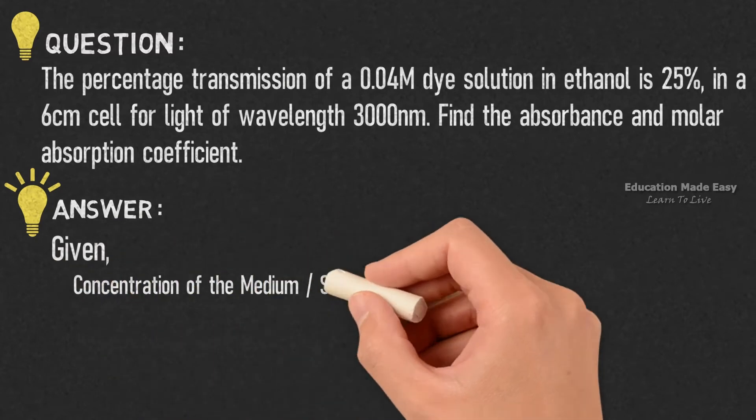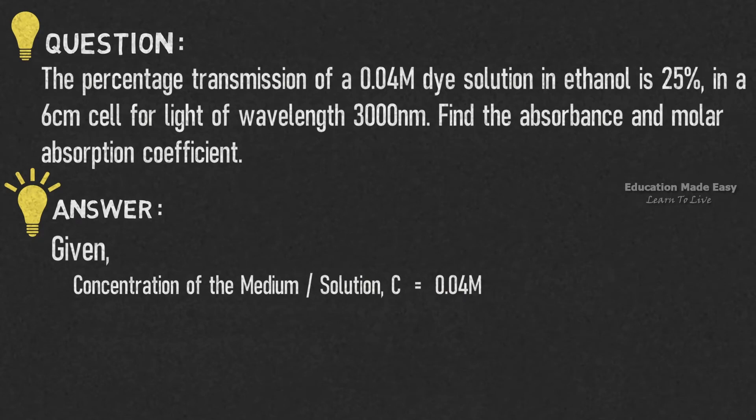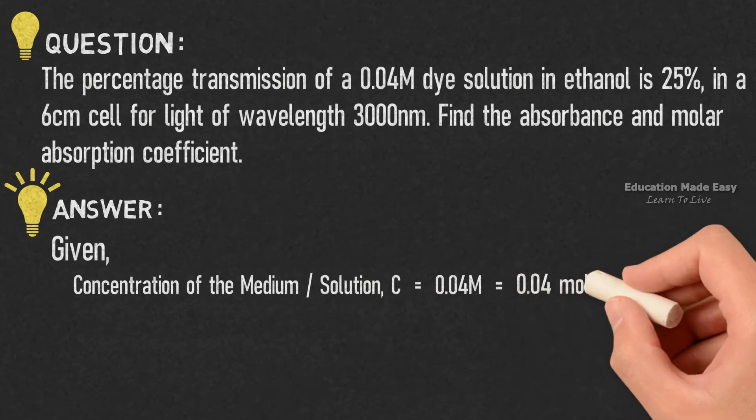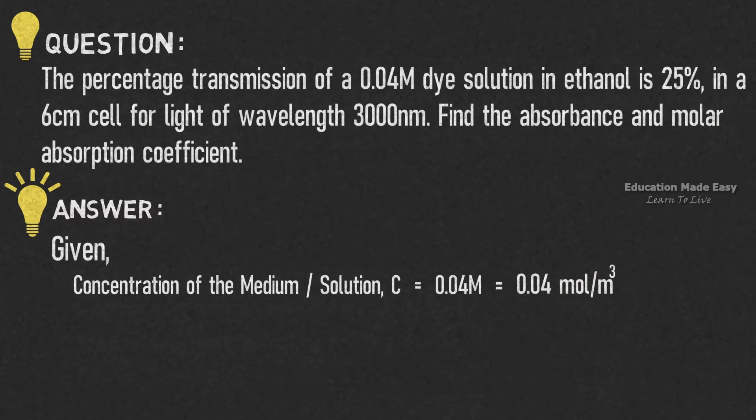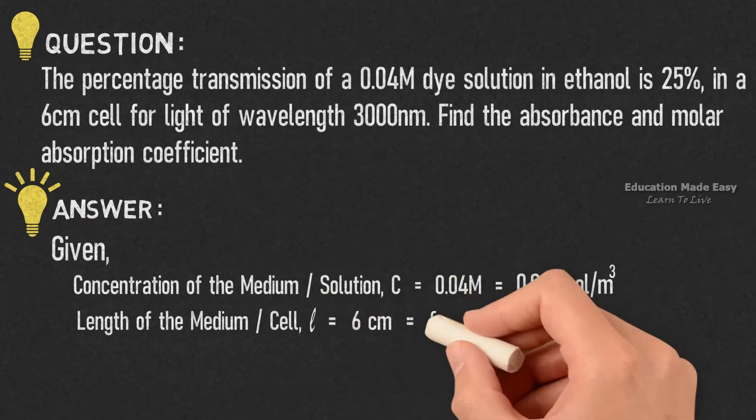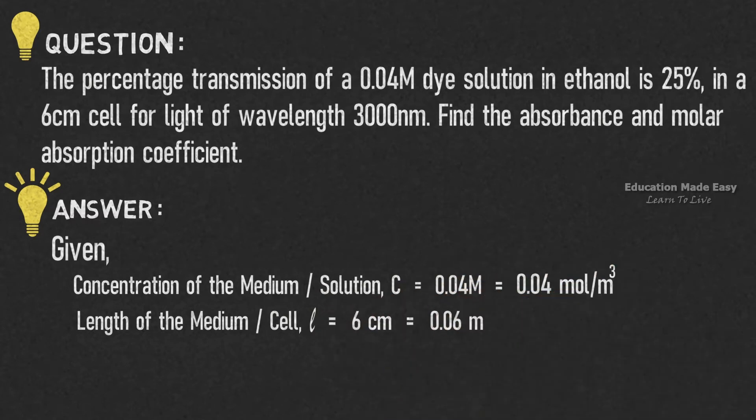It is given that the concentration of the medium or solution C is equal to 0.04M which is equal to 0.04 mol per m³. It is also given that the length of the medium or cell L is equal to 6 cm which is equal to 0.06m.